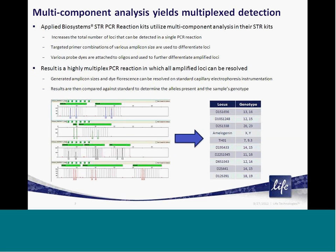Through optimized chemistry, the use of different amplified product sizes and differing wavelengths of the dye detection probes, Life Technologies is able to develop highly multiplexed kits that co-amplify multiple alleles at various loci in a single PCR reaction. Once amplified, these different amplicons can be differentially resolved through capillary electrophoresis to create a complex genotype of the sample.